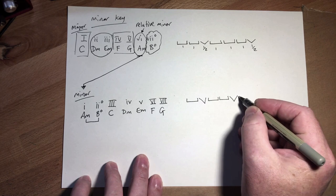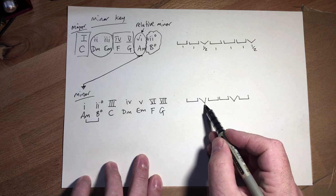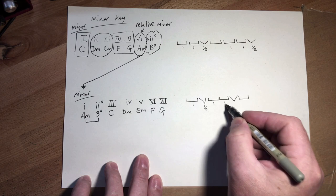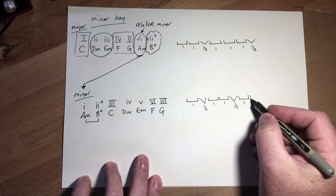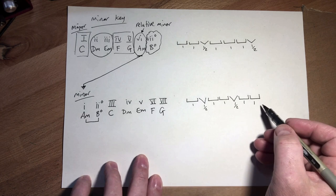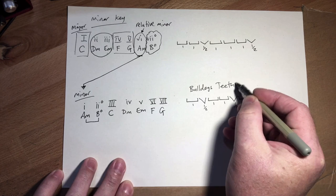You can see that looks like the incisor teeth — these look like the fangs. This is the way I remembered it: whole step, half step, whole step, whole step, half step, whole step. But we've got one missing, so we've got a wonky-tooth bulldog — there's the other tooth there. So this is the order we need to remember — what I call bulldog's teeth, because it's very visual.